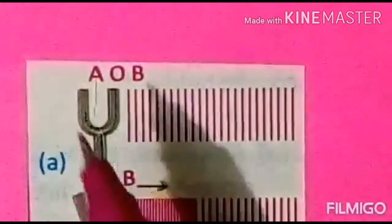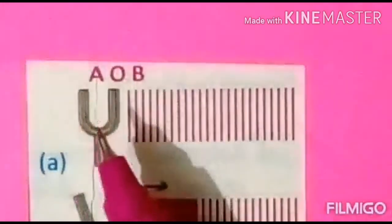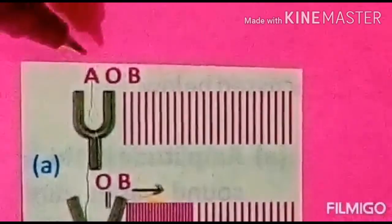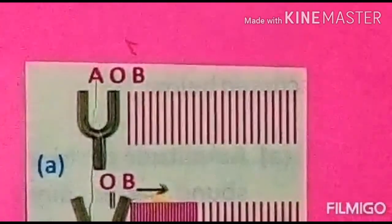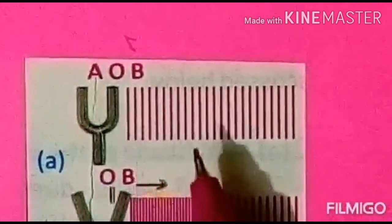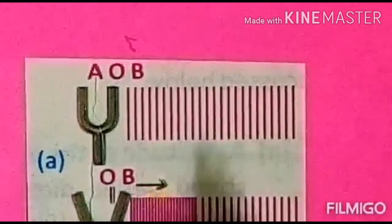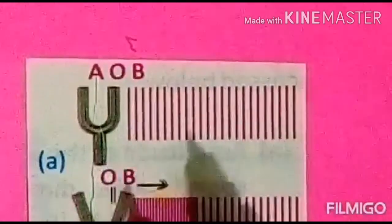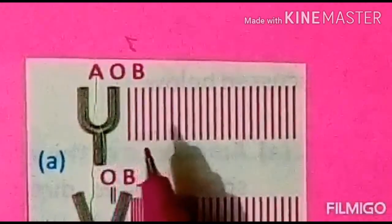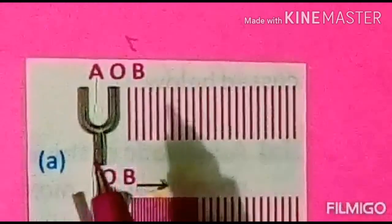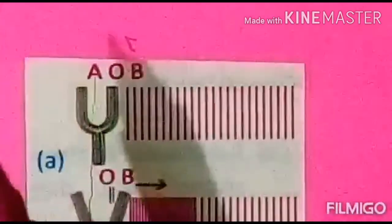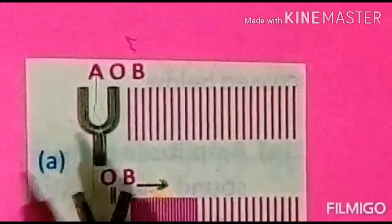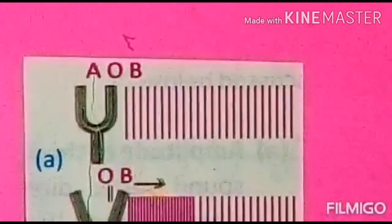This is a tuning fork. This is the main position O, and these are the extreme positions A and B. These are the layers of air molecules adjacent to this prong of the tuning fork. Right now the gap between all the layers is the same, so the density of the air next to the tuning fork is uniform. The tuning fork is at rest — it is not vibrating.